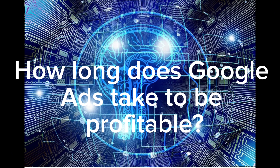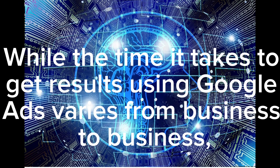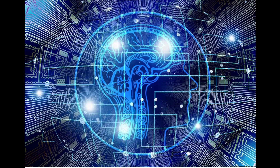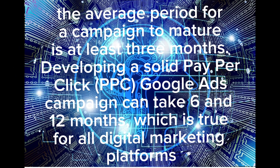How long does Google Ads take to be profitable? The time it takes to get results using Google Ads varies from business to business. The average period for a campaign to mature is at least 3 months. Developing a solid pay-per-click (PPC) Google Ads campaign can take 6 to 12 months, which is true for all digital marketing platforms.